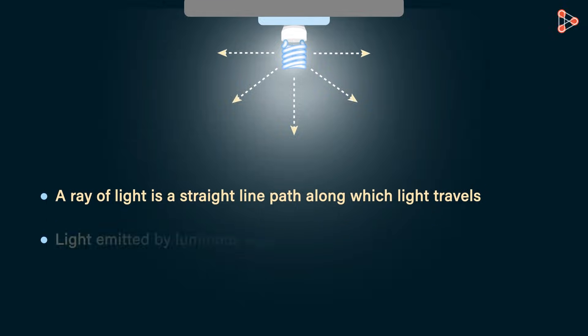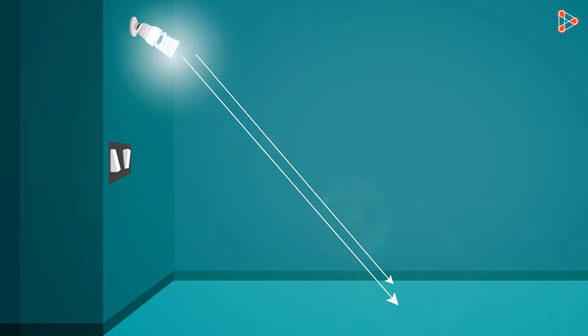So now we know that light emitted by luminous objects travel in a variety of directions. Suppose rays of light from this fluorescent bulb fall on the surface. It being non-luminous reflects these rays and these reflected rays travel along a certain path.